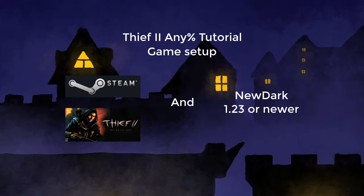By stuff I mean the contents of the New Dark and the Contrib folder. And then after that you need to change a few things in one of the files, and after that you can get to running.